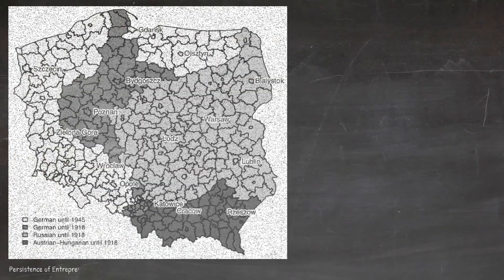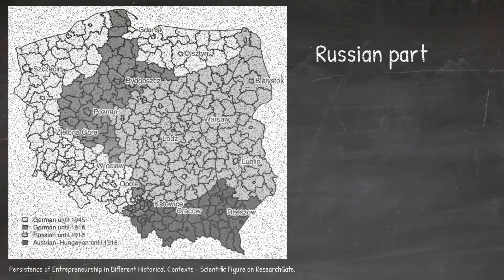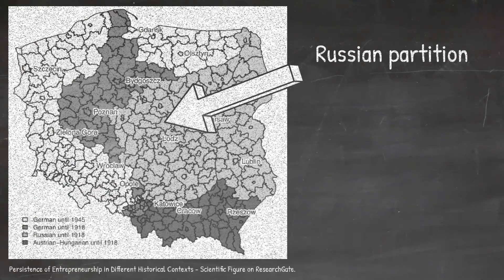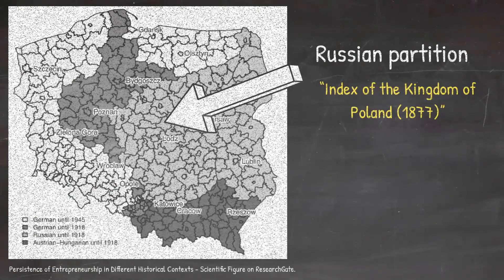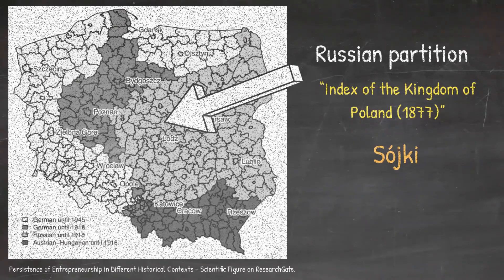Knowing the partition and the faith she observed, we can look at the Index of the Kingdom of Poland, 1877. According to this resource, we learn that the Catholic parish for the village of Suiki is located in Kutno.